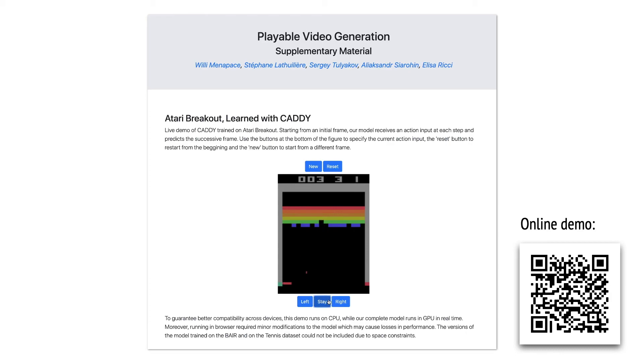The model learned to generate plausible trajectories for the ball. The model also learned that the trajectory of the ball is fully determined by the platform, hence it's not affected by action buttons. The ball can hit bricks and reflect. One hint to identify that the video is generated is that the score is fixed. The model didn't learn to update it.